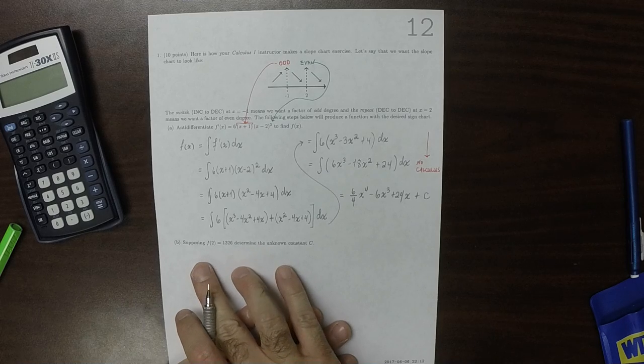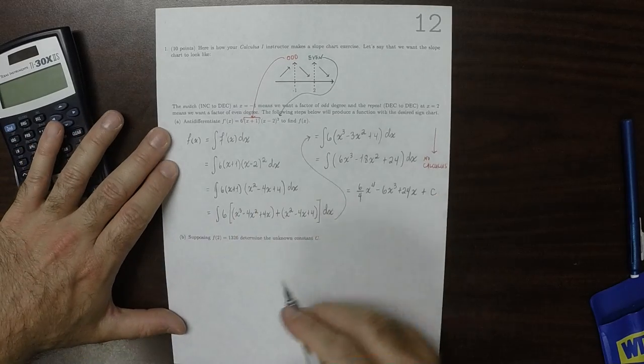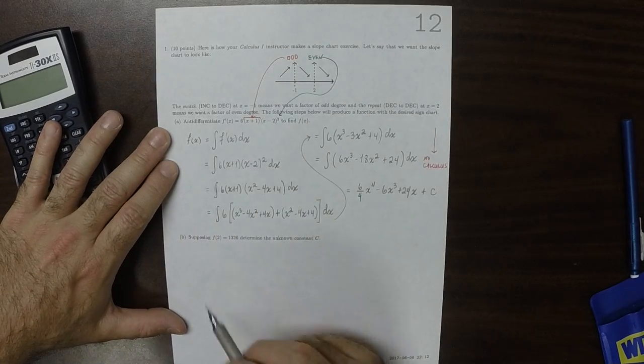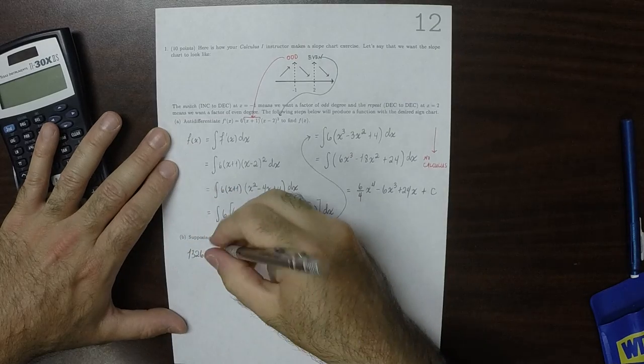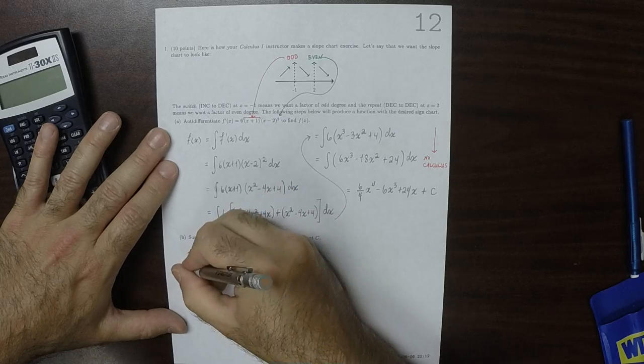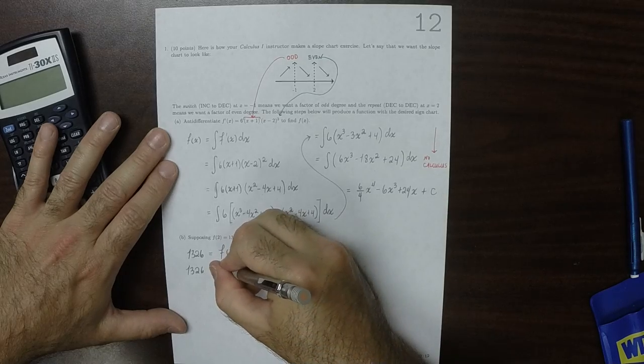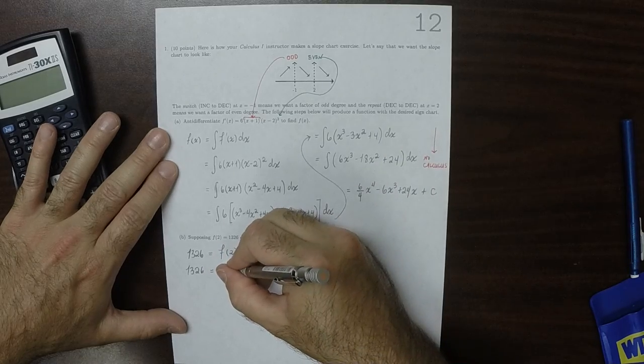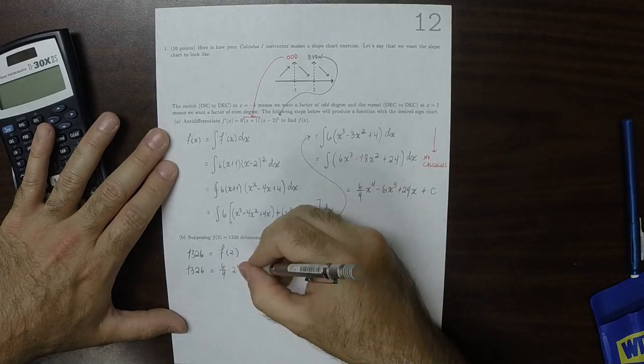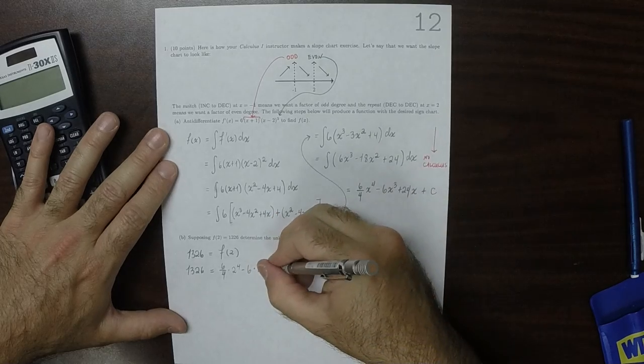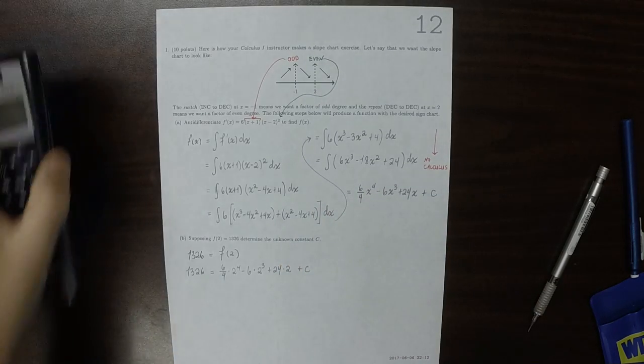And now we want to determine the value of c. So we'll know that we have the right value of c when that's true. So 1326 is f of 2. So 1326 is 6 over 4 multiplied by 2 to the 4 minus 6 multiplied by 2 to the 3 plus 24 multiplied by 2 plus c. That looks like a job for a calculator.